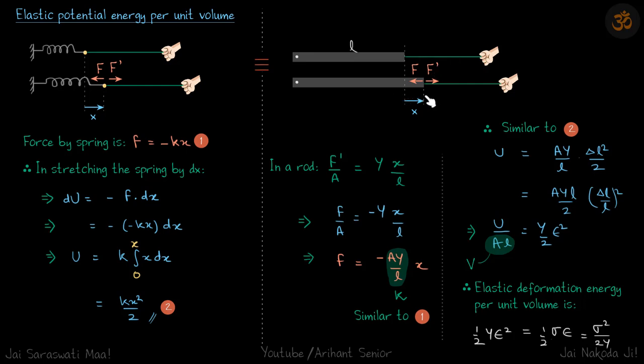Now let's say we have a natural length rod at L and we pull it further by distance x. Again we are pulling it slowly, so just like here we are pulling with F dash.